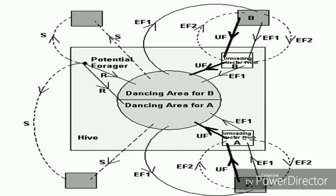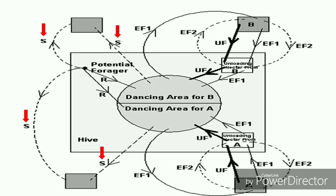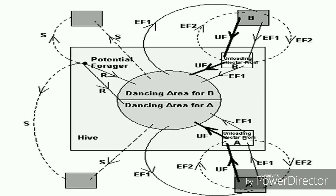In order to better understand the basic behavior characteristics of foragers, let us examine this figure. Assume that there are two discovered food sources, A and B. At the very beginning, a potential forager will start as an unemployed forager with no knowledge about the food sources around the nest. There are two possible options for such a bee: it can be a scout and starts searching around the nest spontaneously due to some internal motivation or possible external clue (S on figure), or it can be a recruit after watching the waggle dances and starts searching for a food source (R on figure). After finding the food source, the bee utilizes its own capability to memorize the location and immediately starts exploiting it, becoming an employed forager.